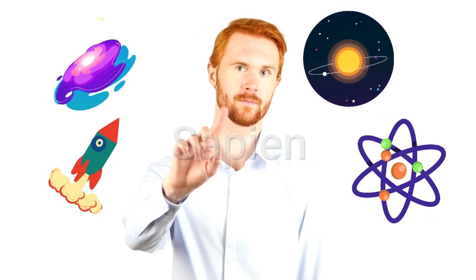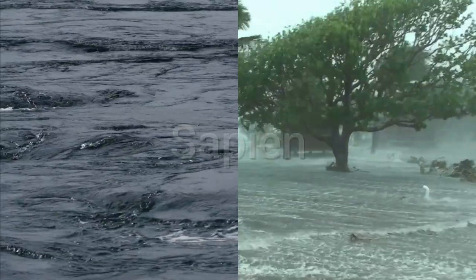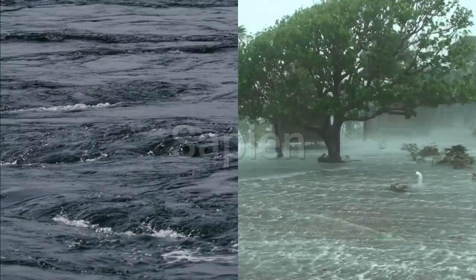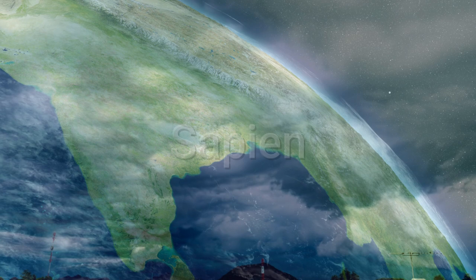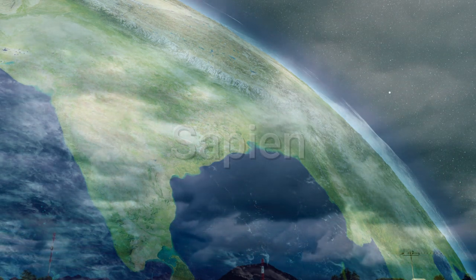Well, it's not just a scientific curiosity. The Indian Ocean geoid low affects everything from ocean currents to climate patterns. It influences the distribution of heat in the Indian Ocean, potentially impacting monsoon patterns that billions of people rely on for agriculture.